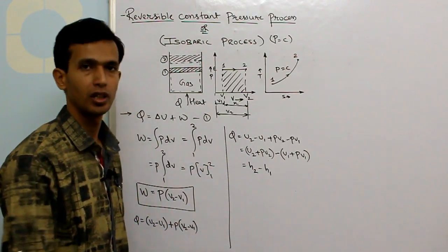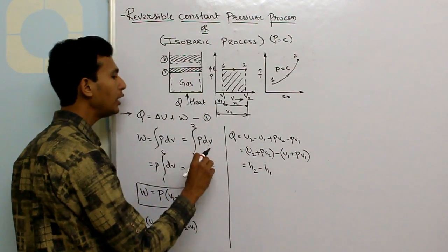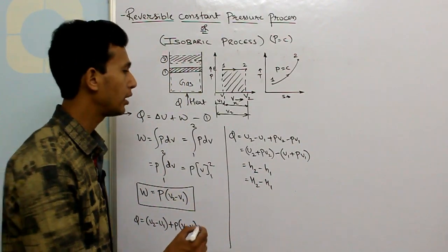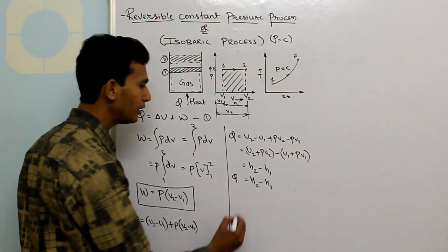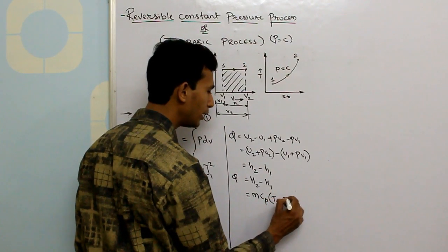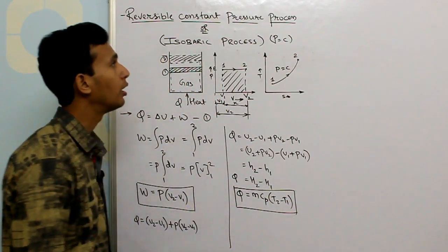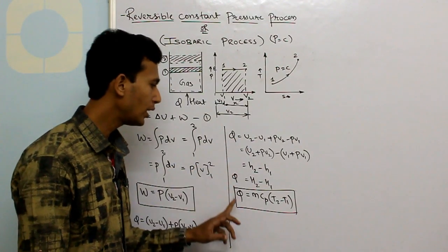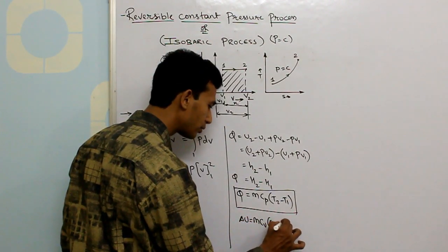This is for 1 kg of gas. Suppose we have m kg of gas; then multiplying by m, we get Q = H2 − H1, where H2 and H1 are total enthalpies at states 2 and 1 respectively. The formula for calculating enthalpy change is Q = m × Cp × (T2 − T1). This is the formula to calculate heat supplied during a constant pressure process. Delta U is given by m × Cv × (T2 − T1).